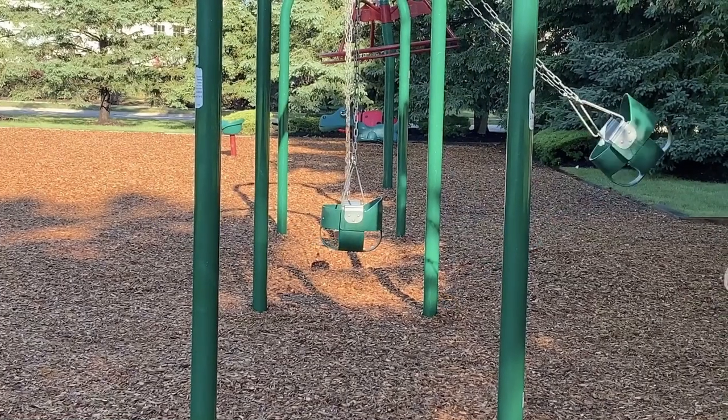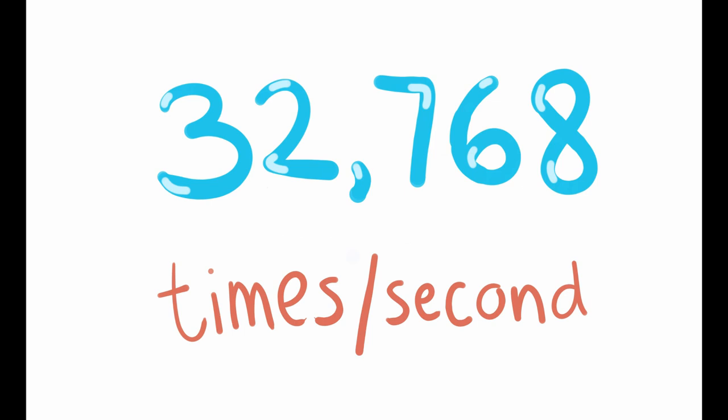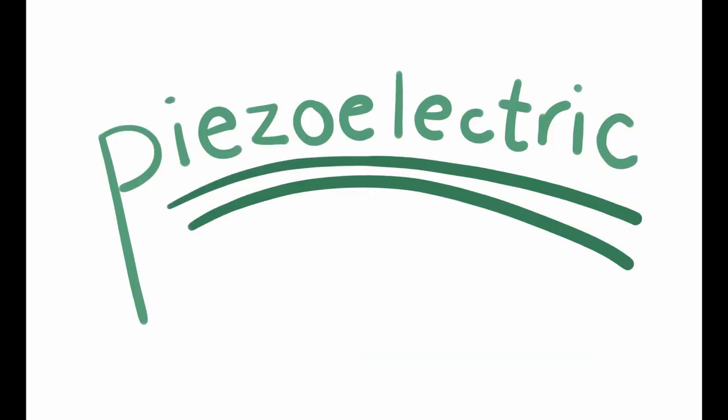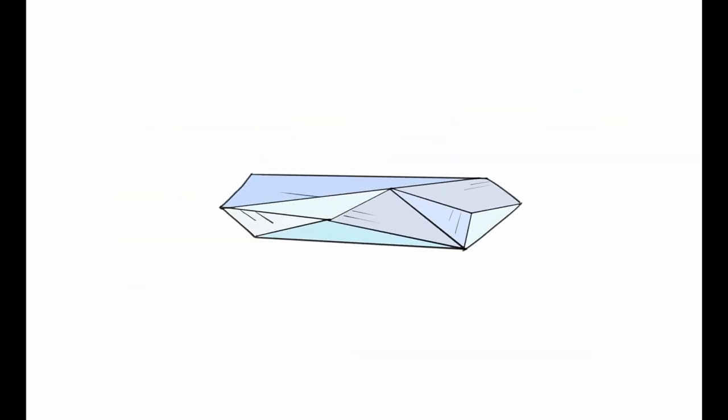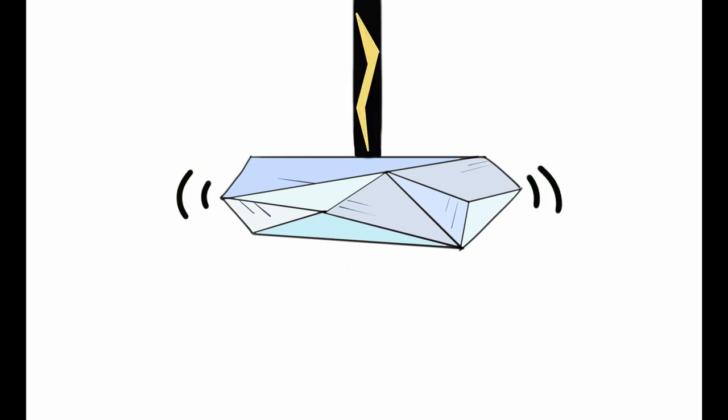In more modern clocks, the frequency reference or pendulum is quartz. When electricity passes through quartz, it vibrates at an exact frequency. Quartz is also piezoelectric, meaning when stressed, it generates an electrical current. This electrical current combined with the vibrations from the quartz generate constant electrical pulses.